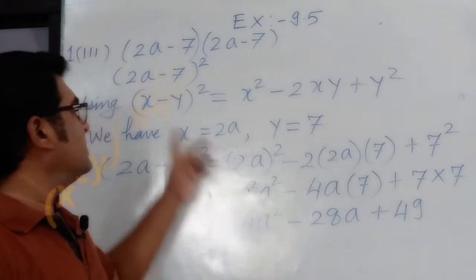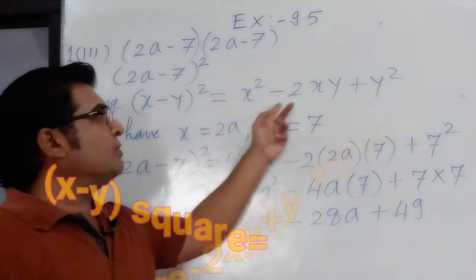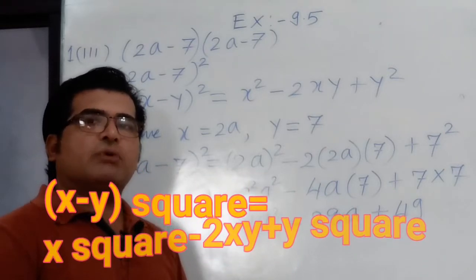Then the suitable identity for this is (x - y) the whole square equal to x square minus 2xy plus y square.